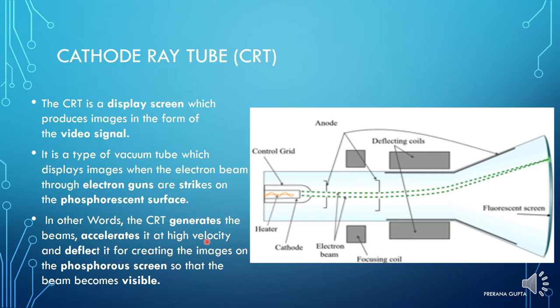The CRT accelerates the beam at high velocity and deflects it for creating images on the phosphorous screen, so that the beam becomes visible. It generates the electron beam at a very high speed and also deflects it, because it needs to display the image in any portion of the screen. So deflection and acceleration of electron beams is done.